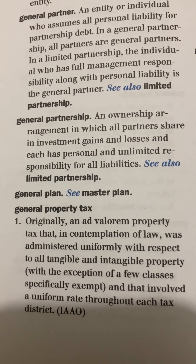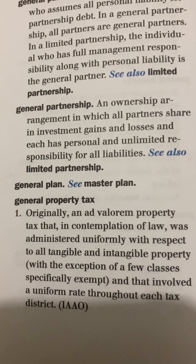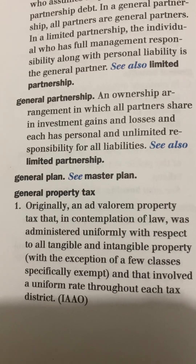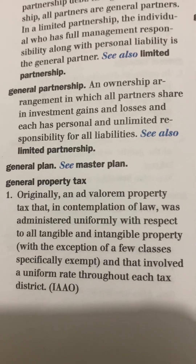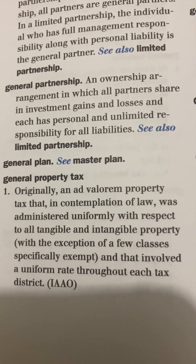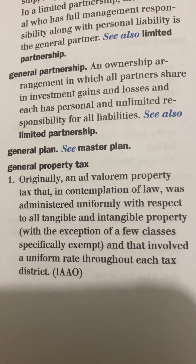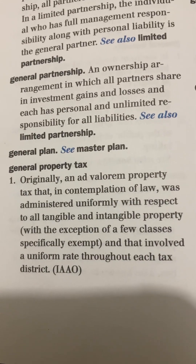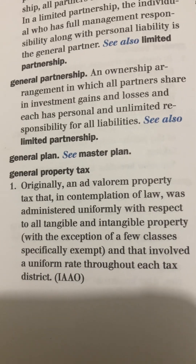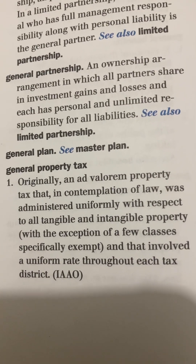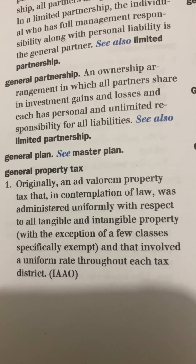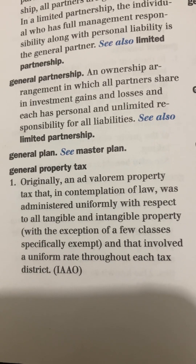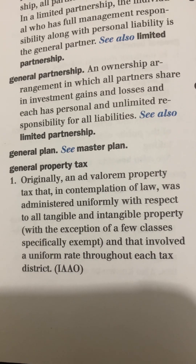General Plan: see Master Plan. General Property Tax, Number 1: originally, an ad valorem property tax that, in contemplation of law, was administered uniformly with respect to all tangible and intangible property, with the exception of a few classes specifically exempt, and that involved a uniform rate throughout each tax district. IAAO.